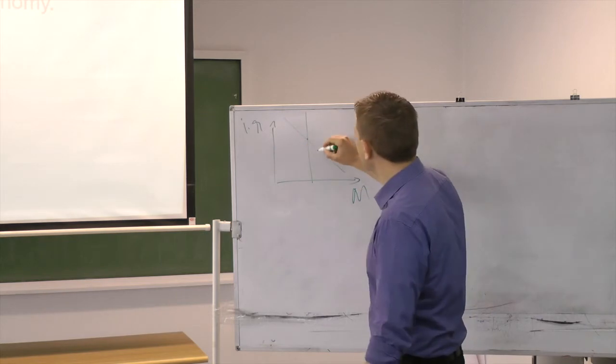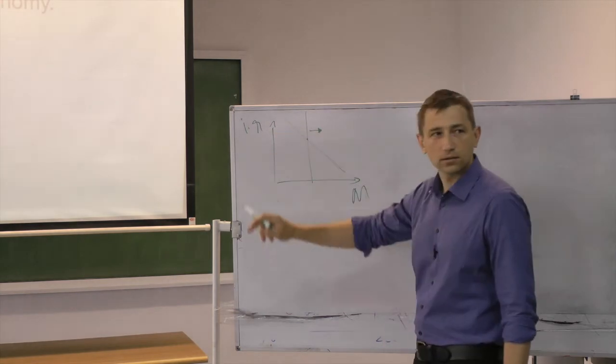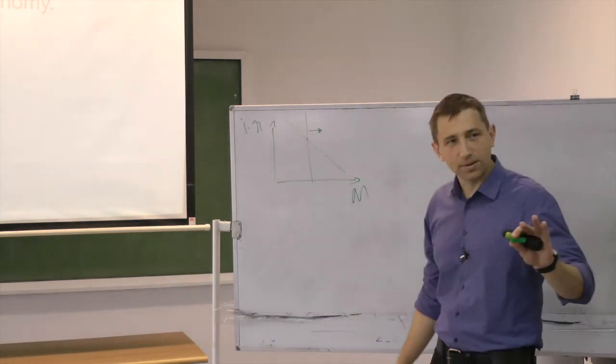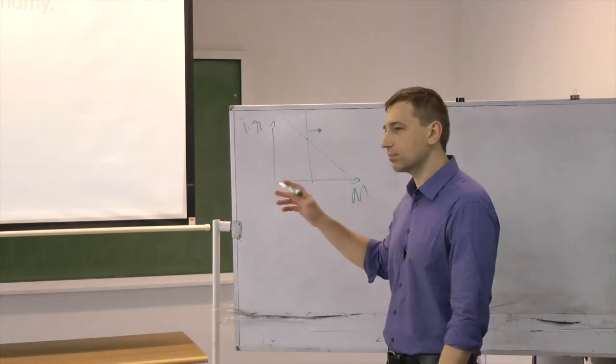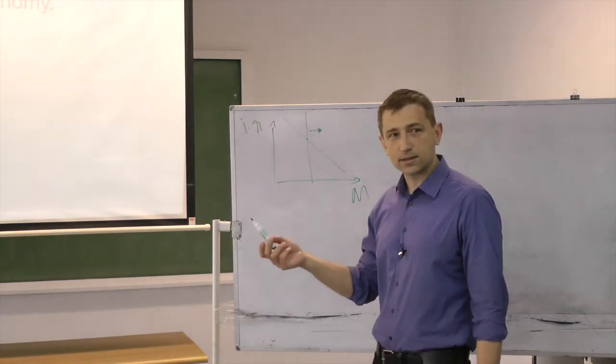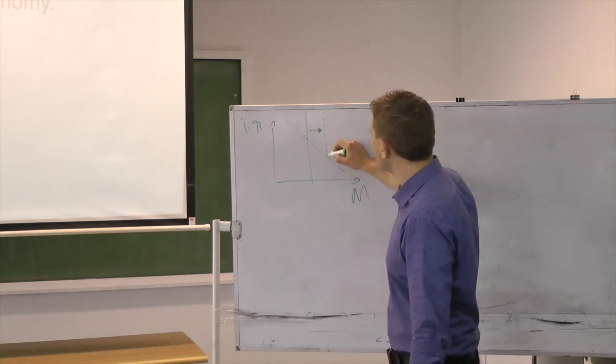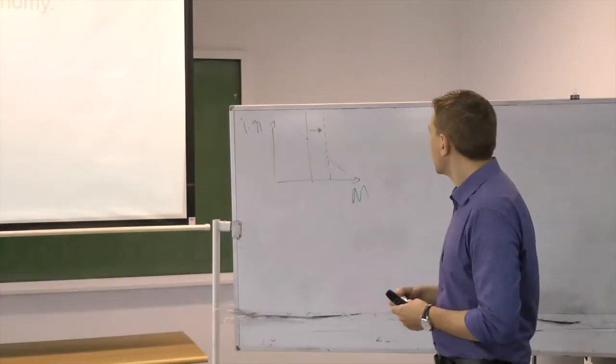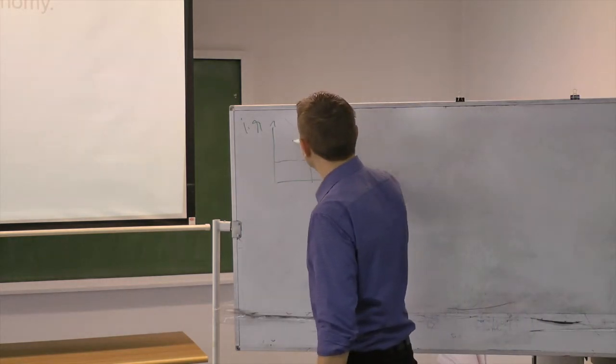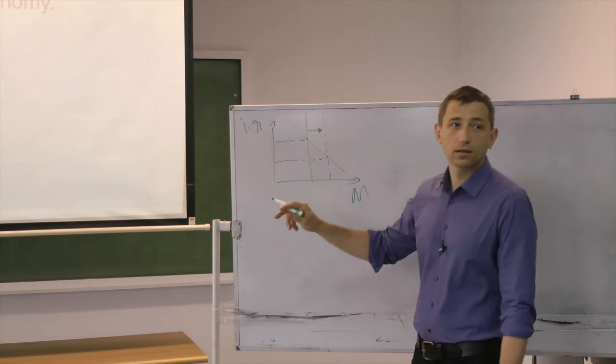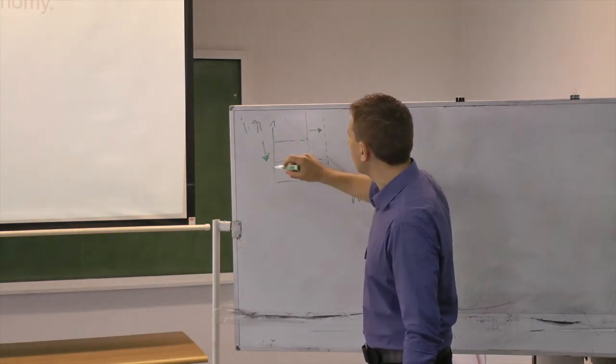And we know that when the money supply is increased, who can do that? The central bank. Okay, so in our textbook the Fed is the main player, but we don't live in the US, so we say central bank. The central bank can increase the money supply. So now suppose the money supply will increase. This will make what the interest rate?